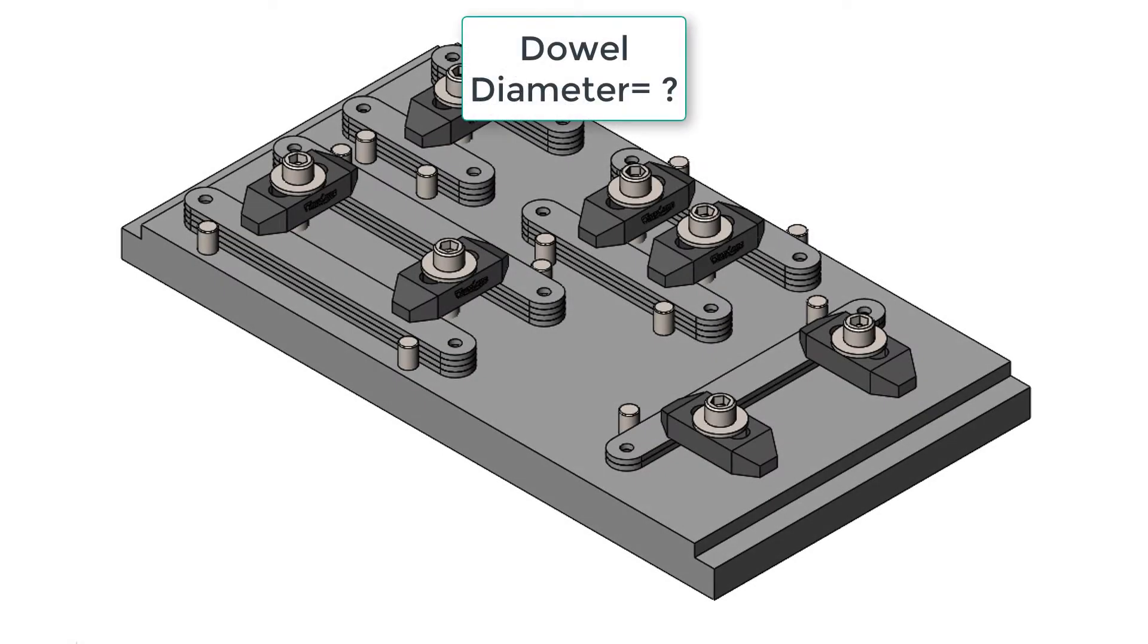When designing a jig fixture, our locators must be designed large enough to resist the cutting forces. With that being said, how do we calculate the diameter of a dowel required to resist such cutting force?